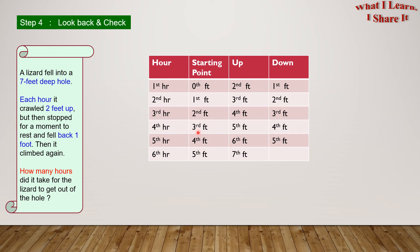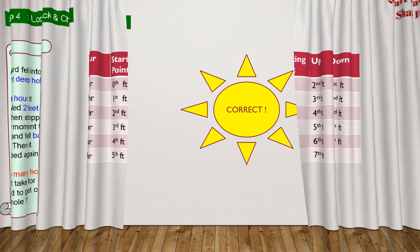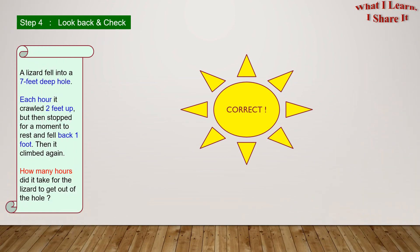In the fourth hour, it'll start from the third foot, go up to the fifth foot, and then fall back to the fourth foot. In the fifth hour, it'll start from the fourth foot, go up to the sixth foot, and then fall back to the fifth foot. In the sixth hour, it'll start from the fifth foot, and go out to the seventh foot, and then it'll get out. This means, in the sixth hour, those lizards will get out of the hole. And this means our answer is... Correct! Yay! We solved the problem!